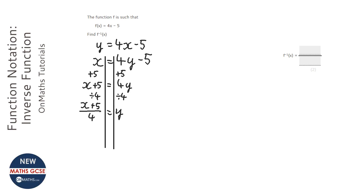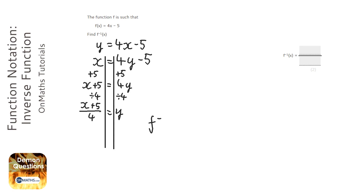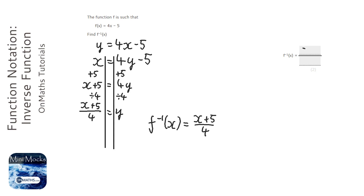Now we made up y — y represented the function initially and then it represented the inverse function. So all we need to do is finish that off. So f to the power of minus 1 of x equals x plus 5 over 4. I'll just put that into the answer box.